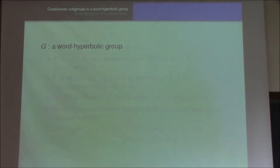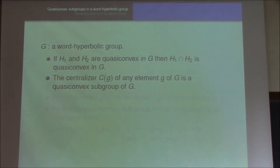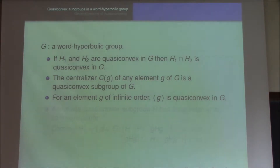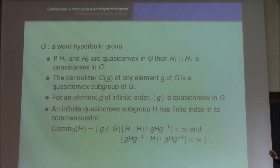Let's record some properties of a quasi-convex subgroup in a word hyperbolic group. First, if we have two quasi-convex subgroups, then the intersection of H1 and H2 is quasi-convex in G. Second, the centralizer of any element G is a quasi-convex subgroup of G. And for an element of infinite order, the cyclic subgroup generated by G is quasi-convex in G.